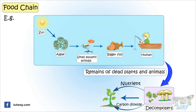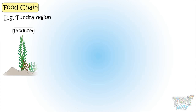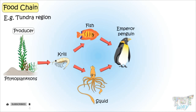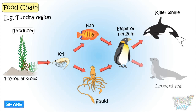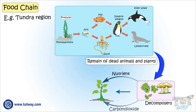Here is another food chain from the tundra region. As we know, all food chains start from producers. Here too, first are very small plants called phytoplankton, which are eaten by krill. Krill is eaten by squids and fish. Squids and fish are eaten by emperor penguins. Emperor penguins are eaten by killer whales and leopard seals. Dead remains are decomposed by decomposers and converted to nutrients for soil and carbon dioxide for air.